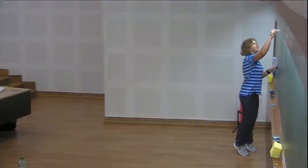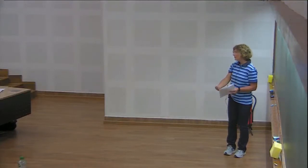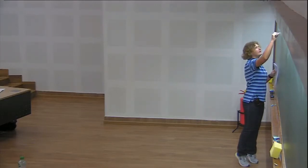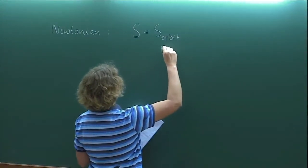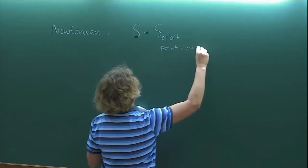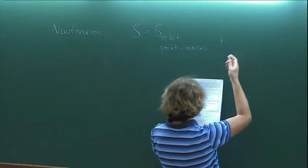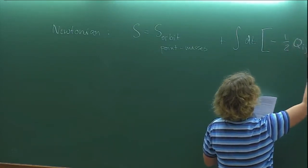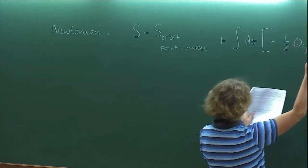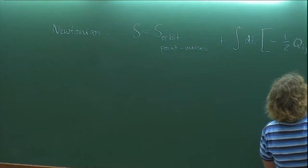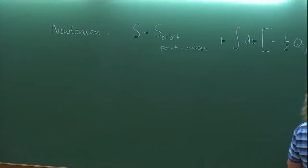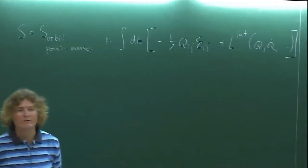So we had a Newtonian action, discussing up to quadrupolar order — but it can be straightforwardly extended to any multipole. We had this action principle for the binary: the orbital part for point masses, plus an interaction term: minus one-half the coupling of the quadrupole to the tidal field, plus the internal Lagrangian depending on q, q-dot, and possibly higher derivatives. That depends on what model you assume for the quadrupole.